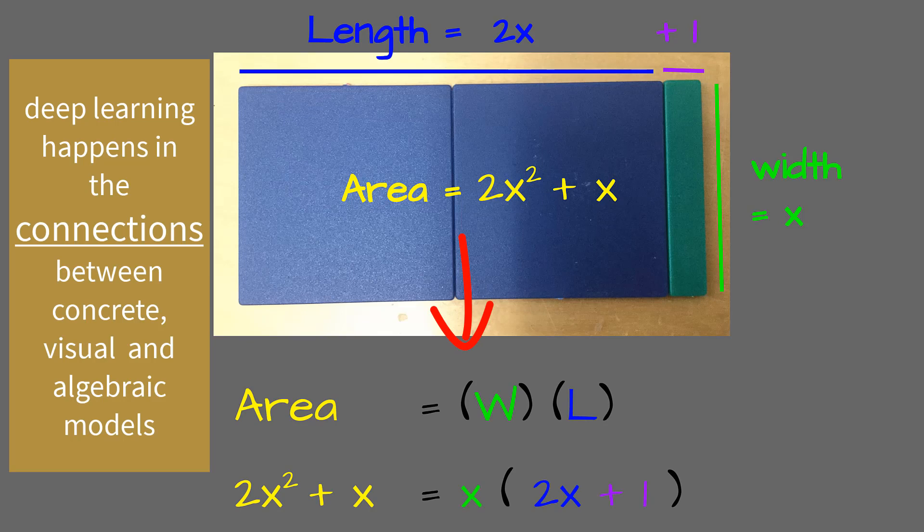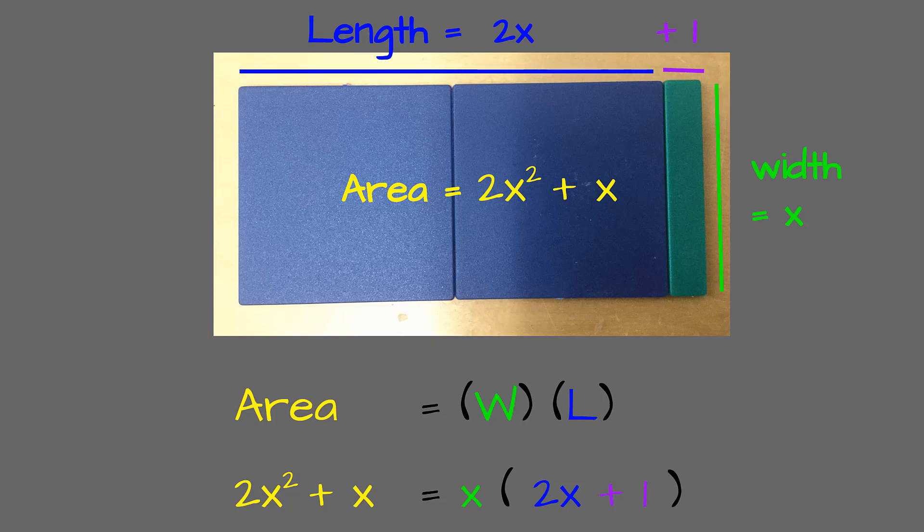And again, we're going to help them make those connections between the concrete and the visual and the algebraic because that's where the deep learning really happens. And now we're just going to ask our students to go back and forth between area and width and length to really understand the different forms of those equations and what they mean. Thanks so much for listening.